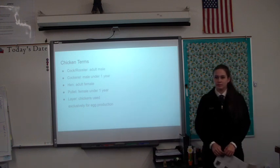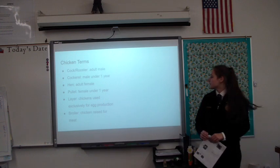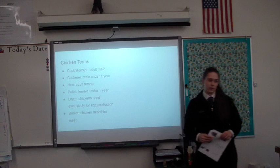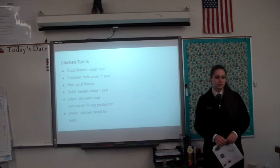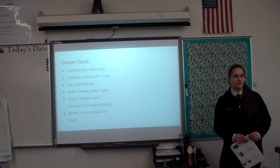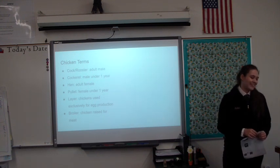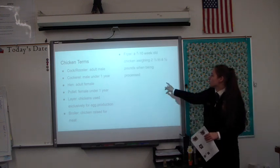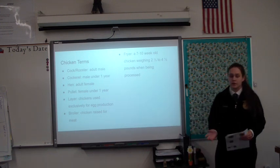How about a broiler? They're used specifically for meat — that's right. Layers are used for their eggs and broilers are raised for their meat. What about a fryer? The name gives away that it is used for meat, but it's a specific term for chickens that are 7 to 10 weeks old and about 2½ to 4½ pounds when being processed.